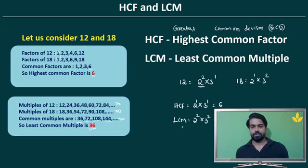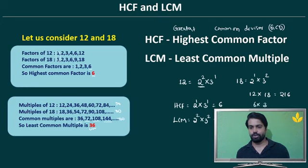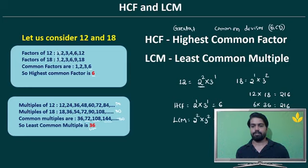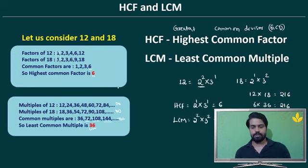We should also note that 12 × 18 = 216, and HCF × LCM = 6 × 36 = 216 as well. So for any two numbers A and B, their product equals the product of their HCF and LCM. This formula is useful when one number is missing. Remember, this works only for two numbers.